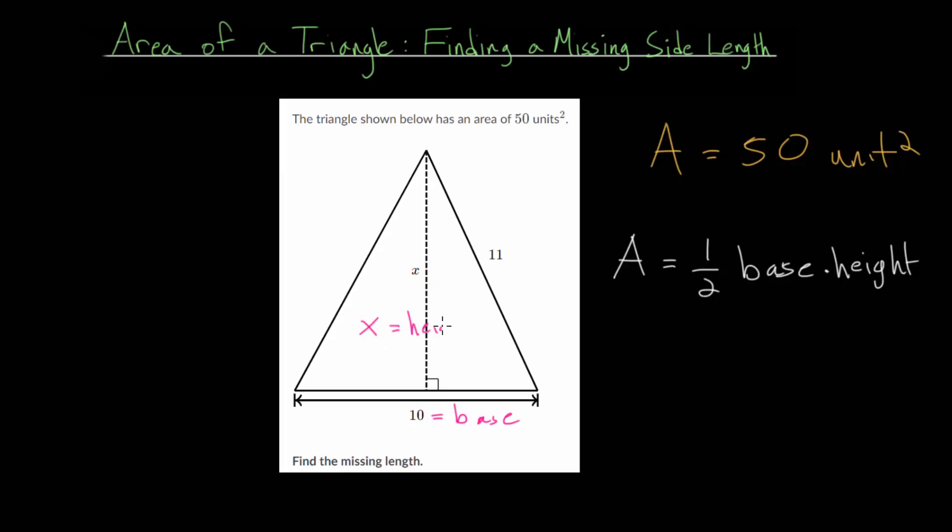So x is the height of our triangle, and keep in mind with this formula that the base and the height of the triangle in this area formula must be perpendicular to each other. So there must be a right angle between the two.